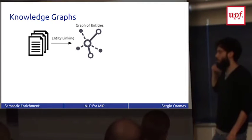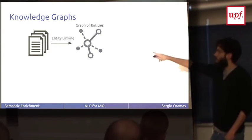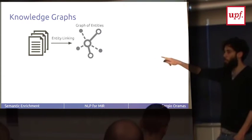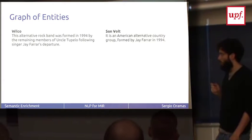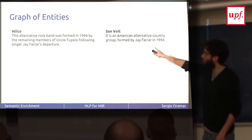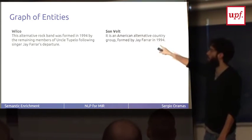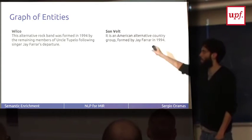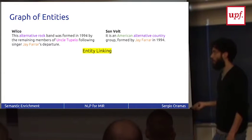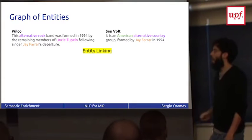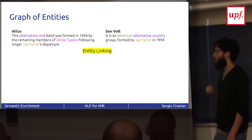But if instead of doing this process, we can also just apply entity linking to the documents and then create what we call a graph of entities. So this is, for example, two documents, the biography of Wilco and the biography of Son Volt. And we have these sentences from there. So the idea here is applying entity linking first. So the system identifies different entities and then builds a graph with this.